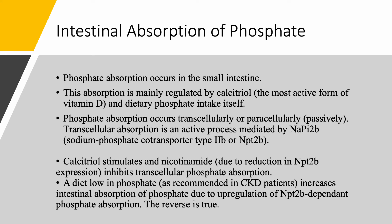Phosphate absorption occurs in the small intestine, and this absorption is regulated by calcitriol — the most active form of vitamin D, 1,25-dihydroxyvitamin D3 — and also by dietary phosphate intake itself. The absorption can be either transcellular or paracellular; when it's paracellular it is, as always, passive. Transcellular absorption is an active process mediated by a co-transporter called sodium phosphate co-transporter type 2B, or NPT2B, also called NaPi2B.